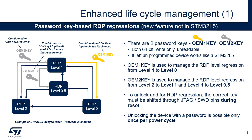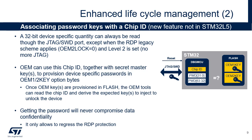OEM1-key can always be modified when RDP is 0, and can be changed when RDP is 0.5 or 1 if OEM1-LOCK equals 0. OEM2-key can always be modified when RDP is 0 or 0.5, and can be changed when RDP is 1 if OEM2-LOCK equals 0. Through the debug interface, a 32-bit device-specific quantity can be read to compute device-specific passwords. This method does not apply if RDP level is 2 and OEM2-LOCK equals 0. Getting the password will never compromise data confidentiality; it only allows regression of the RDP protection.